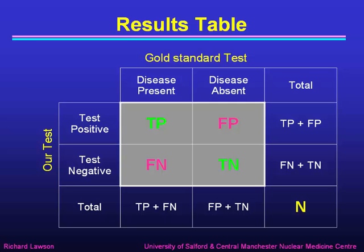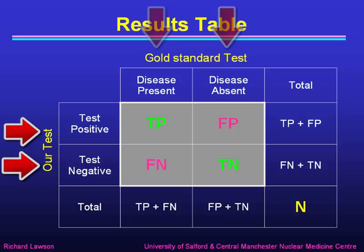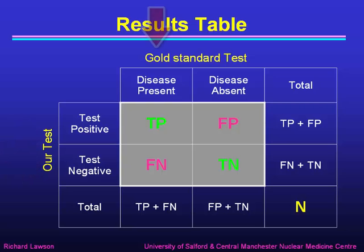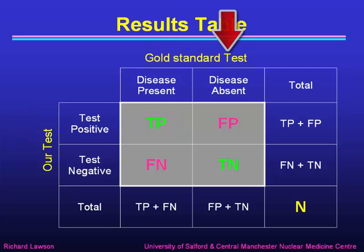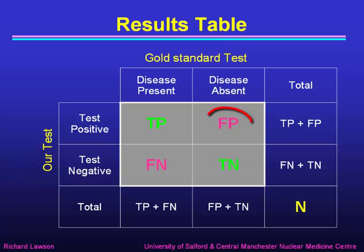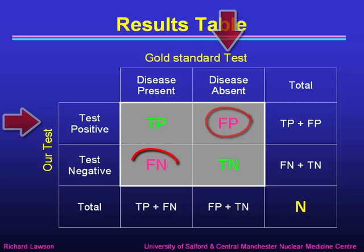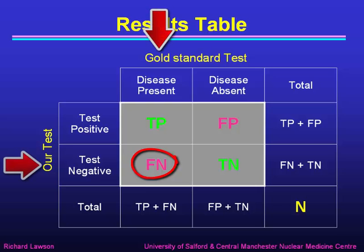We can tabulate those results in a table where columns represent the results of the gold standard test and rows represent the result of our test. If the gold standard says disease is present and our test is positive, we have true positives. If the gold standard says disease is absent and our test is negative, we have true negatives. We also have false positives when the disease is absent but our test is positive, and false negatives when the disease is present but our test is negative.